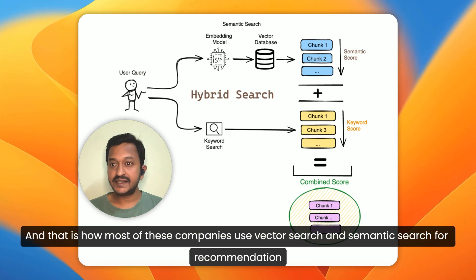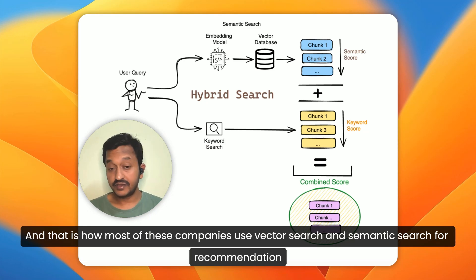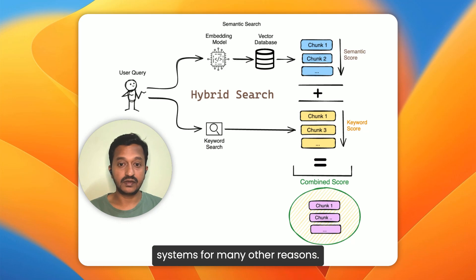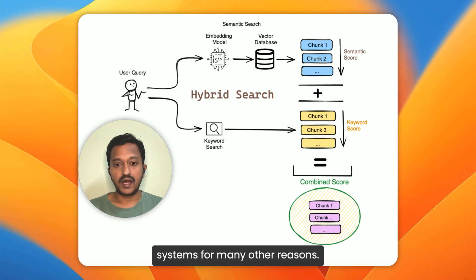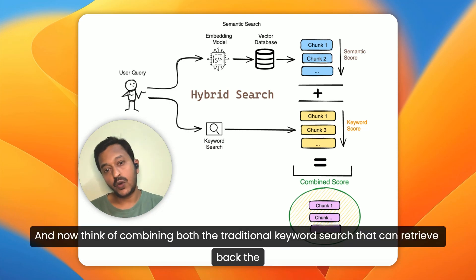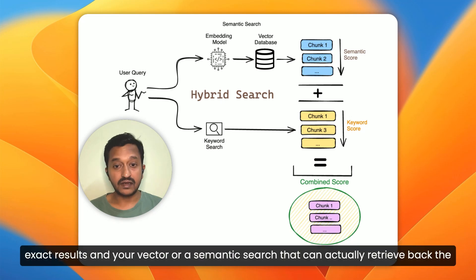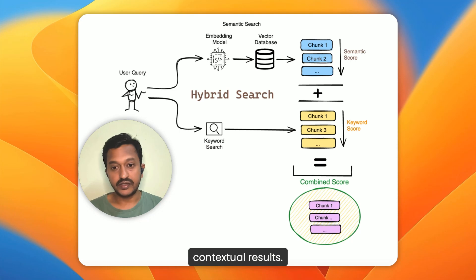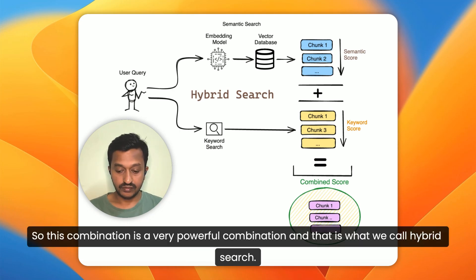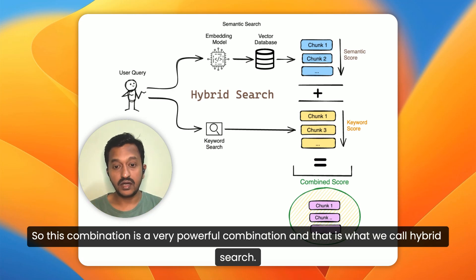That is how most companies use vector search and semantic search for recommendation systems and many other reasons. Now think of combining both — the traditional keyword search that retrieves exact results and your vector or semantic search that retrieves contextual results. This combination is a very powerful one and that is what we call hybrid search.